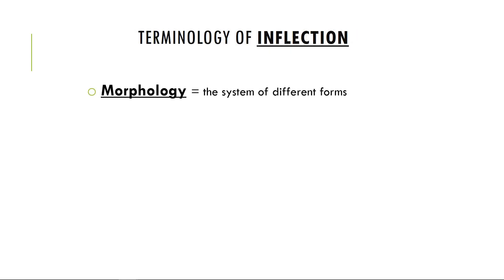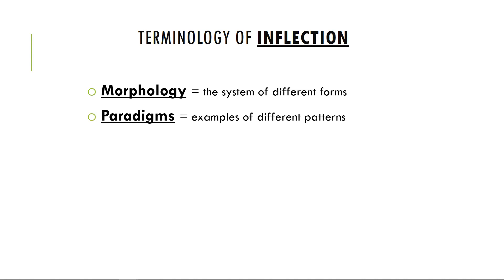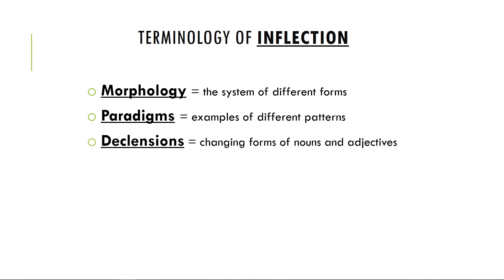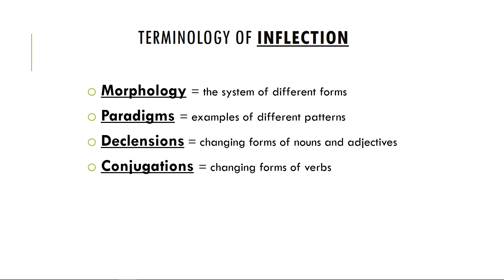Morphology is how you change the form depending on the meaning — the changes from 'I am' to 'you are.' Morphology identifies the form; it's literally the study of shapes. We'll give you paradigms, which are examples of different patterns. So 'I am, you are, he/she/it is, we are, you are, they are' is the paradigm of the present indicative active of the verb 'to be' — it gives you all the possible forms. Nouns and adjectives change their form by declining — we talk about noun declensions. Verbs are given in conjugations and so verbs conjugate. Whenever I say a noun is conjugating or a verb is declining, it's because I'm losing my mind. Nouns and adjectives decline; verbs conjugate.